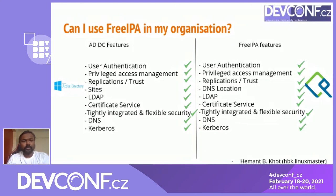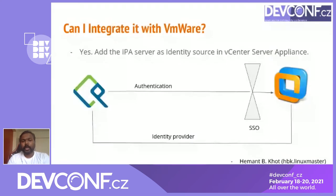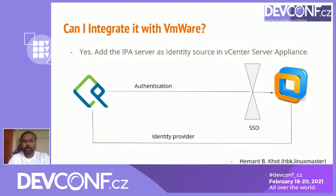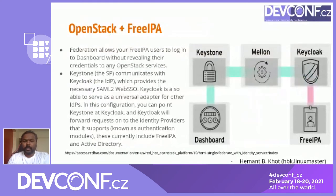Can I integrate with VMware? Yes — you can actually achieve SSO with VMware using FreeIPA. You just need to set up FreeIPA as the identity provider with your vCenter Server Appliance. When you want SSO authentication, your identity provider should be set as FreeIPA, and then you can achieve SSO as well.